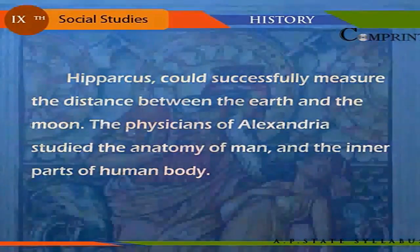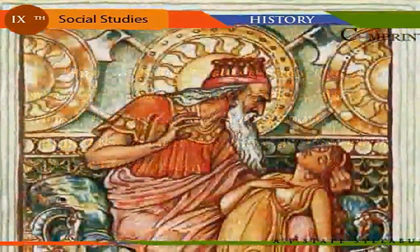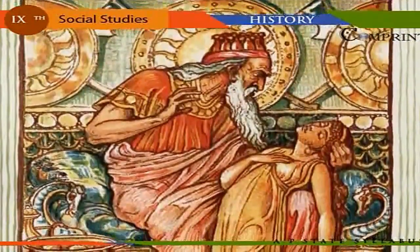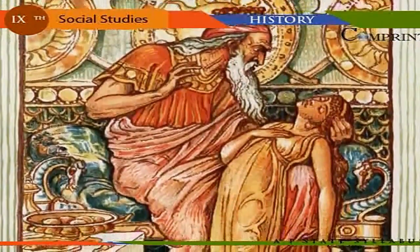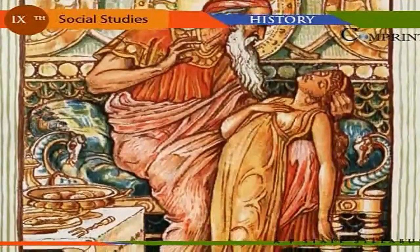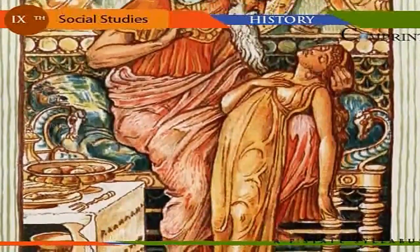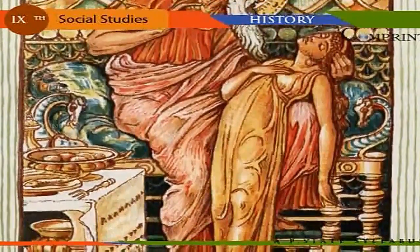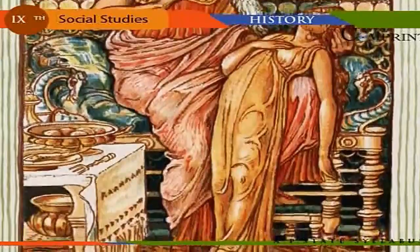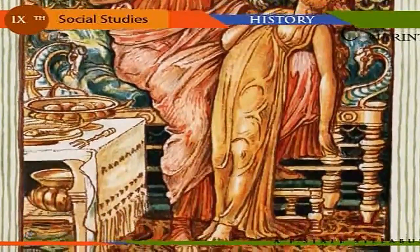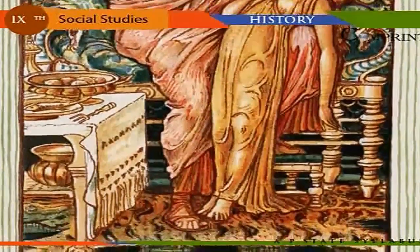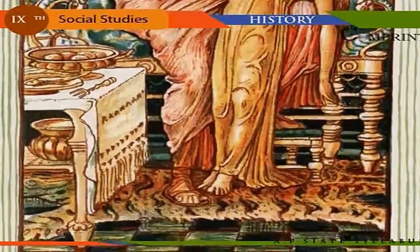The physicians of Alexandria studied the anatomy of man and the inner parts of the human body. The arts and sculpture of the Greeks were marvelous; Myron, Phidias, and others were famous sculptors. The Greek culture is very valuable in the history of human civilization, as it provided human culture with liberal imagination and aesthetic values.